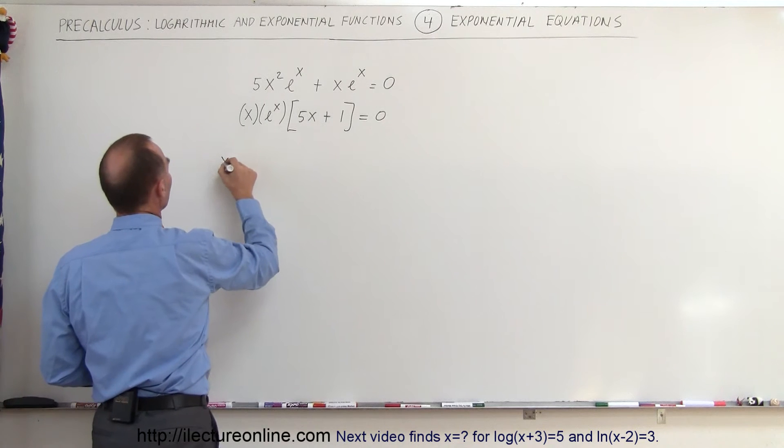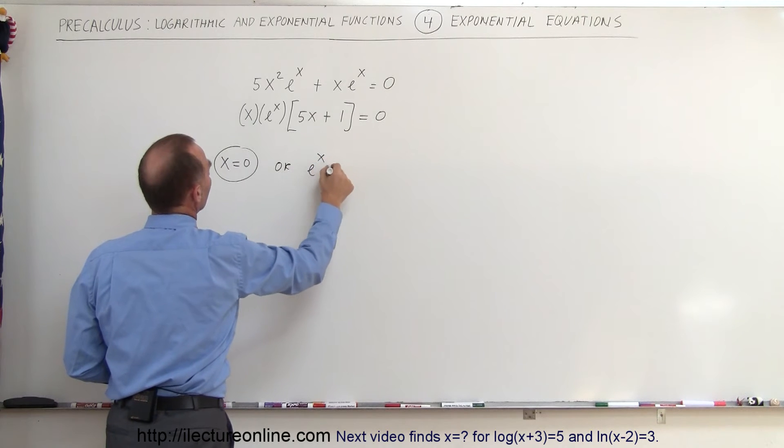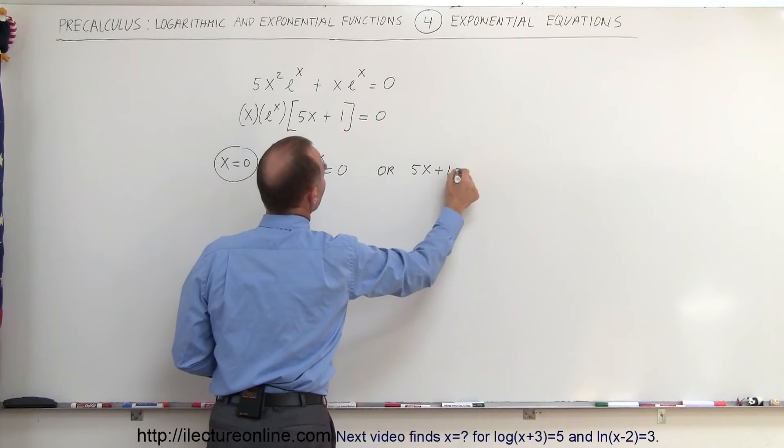So that means x is equal to 0 which is one of the solutions, or e to the x equals 0, or 5x plus 1 equals 0.